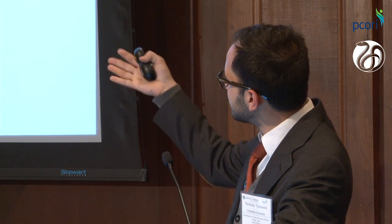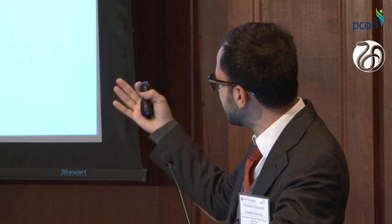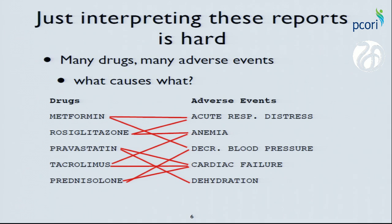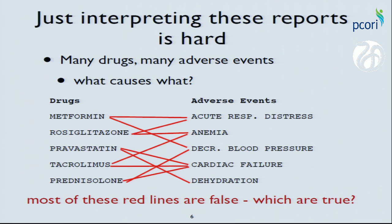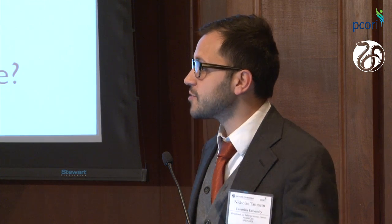But interpreting just one of these adverse event reports is very difficult. Here you have a patient who is on metformin, glitazone, pravastatin, and possibly had a transplant, and they had these adverse events. How do you know which drug is causing which adverse event? If you just try to draw all the lines, you'll end up with an enormous number of false positive associations — and that is the challenge the FDA faces every day.